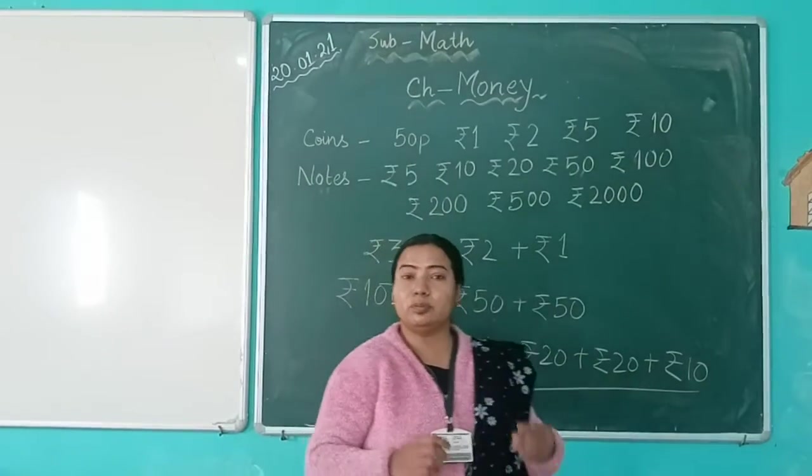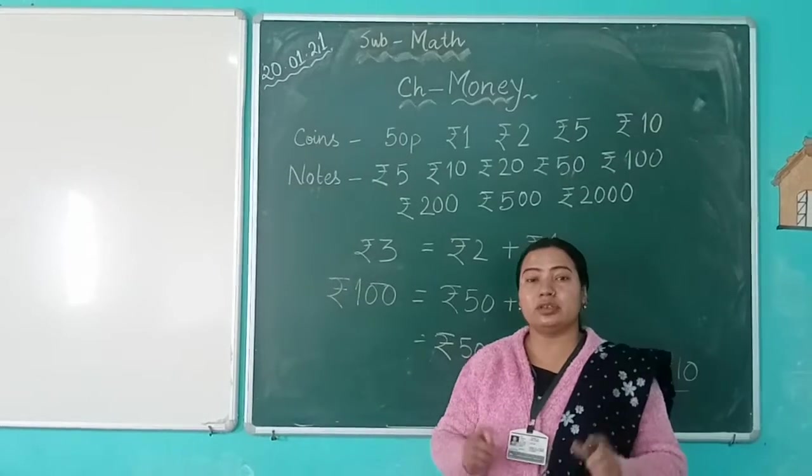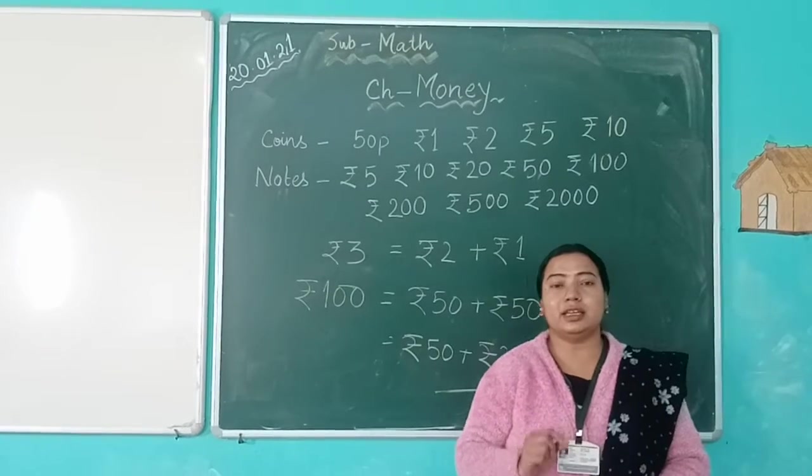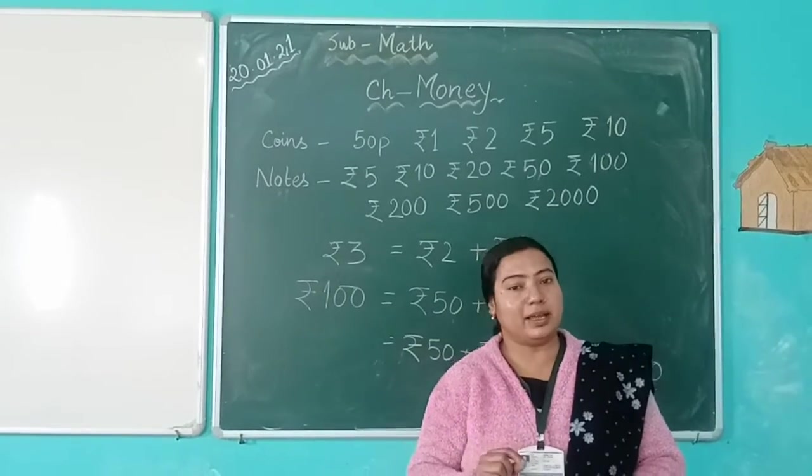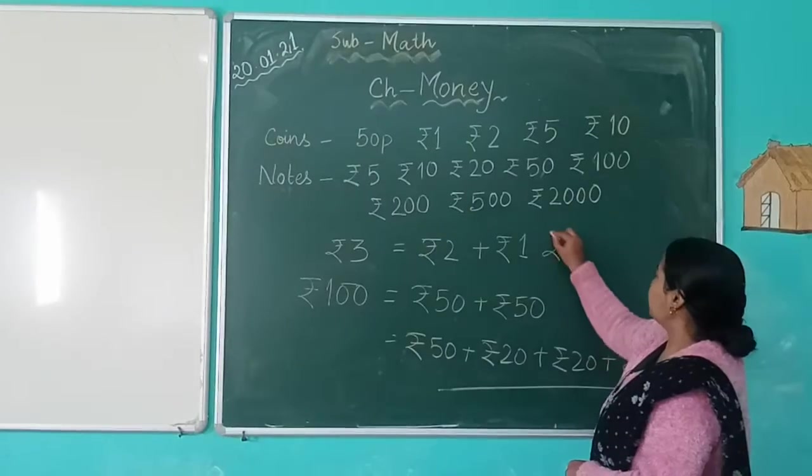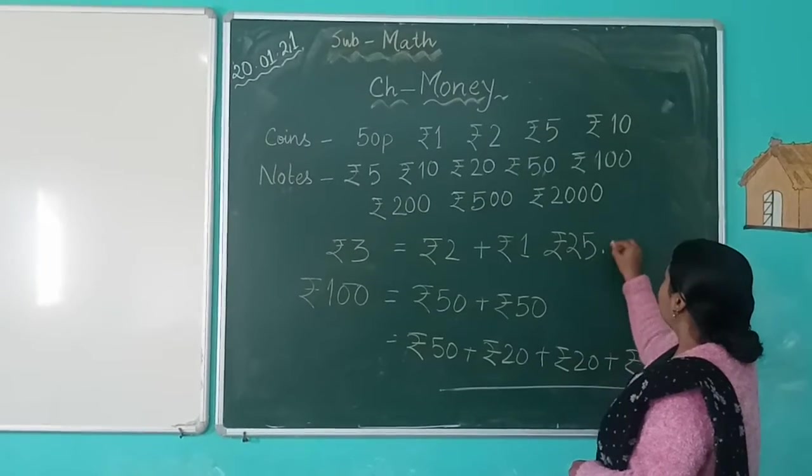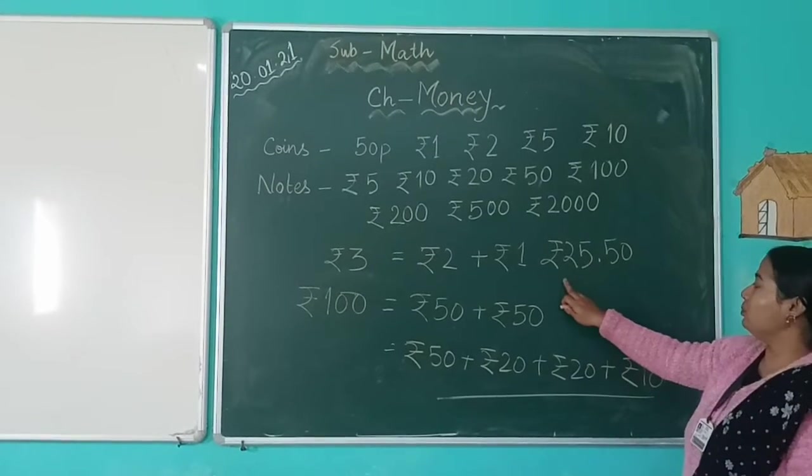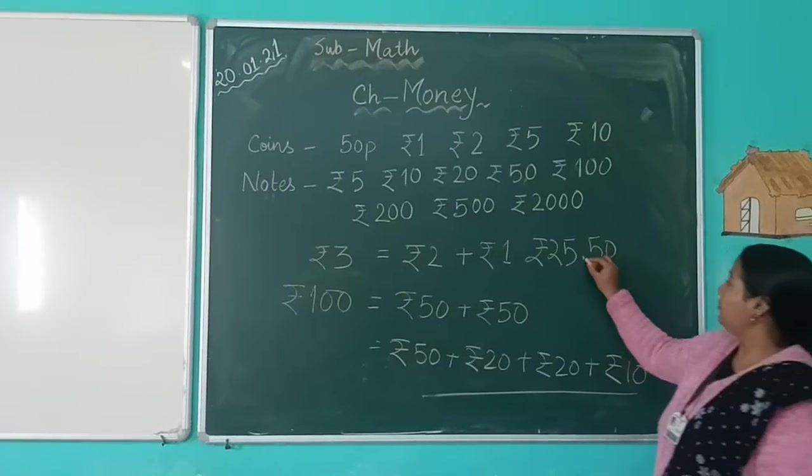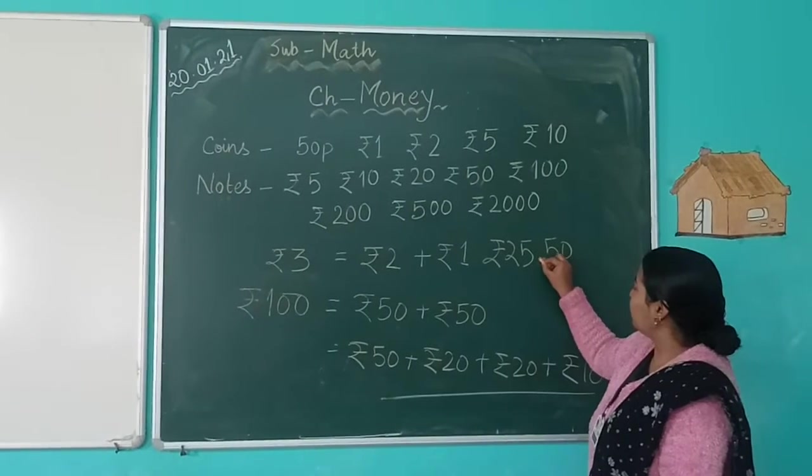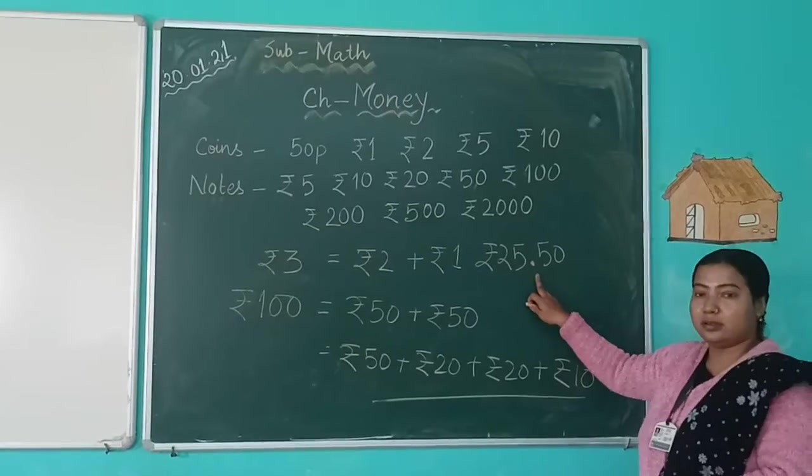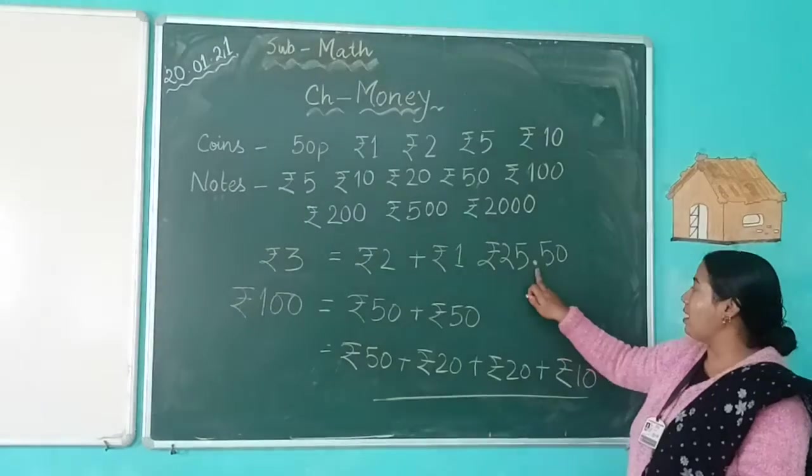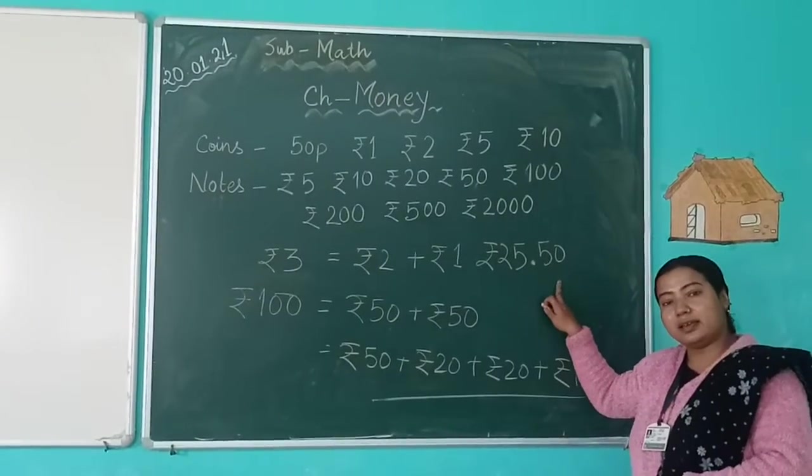Now when we count rupees and paisa, we don't write them separately. Like rupees 25 and 50 paisa - we write this with a decimal point: 25.50. Before the point denotes rupees, and after the point denotes paisa.